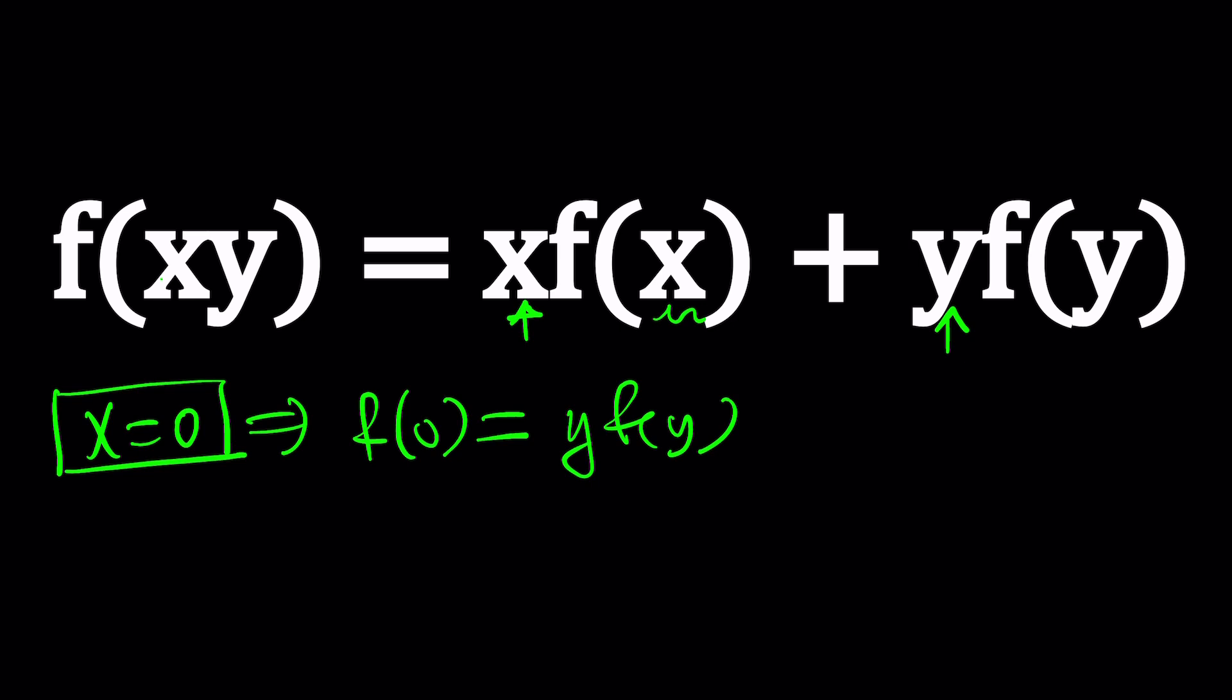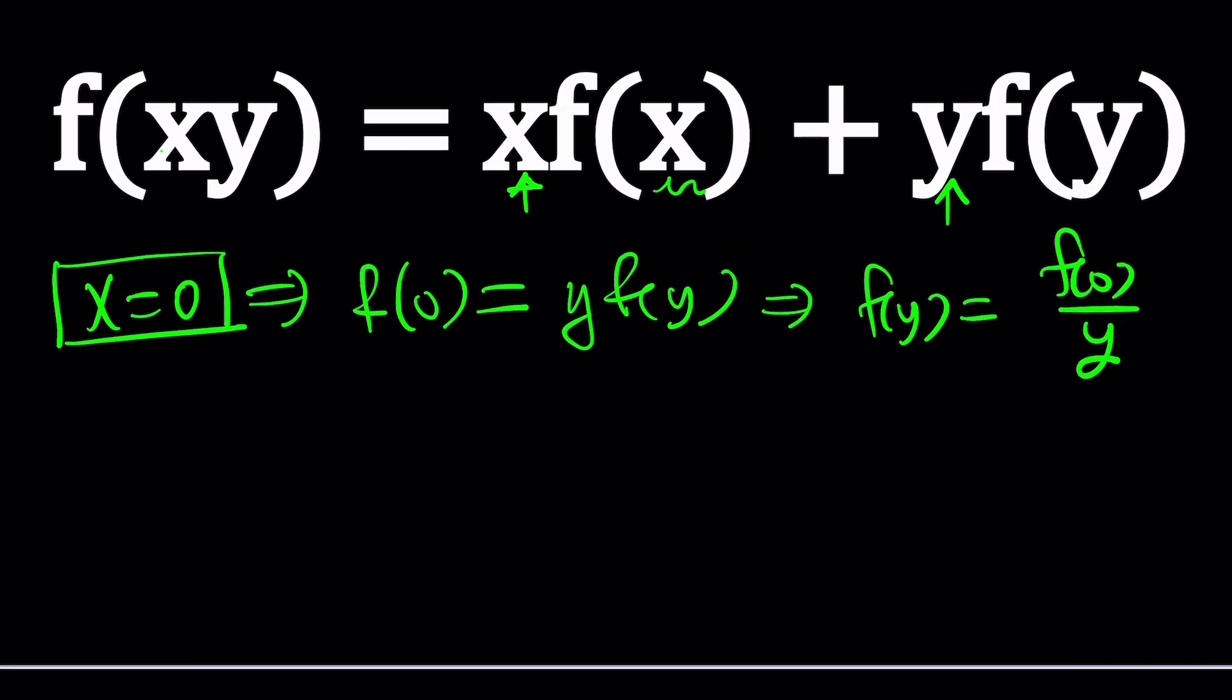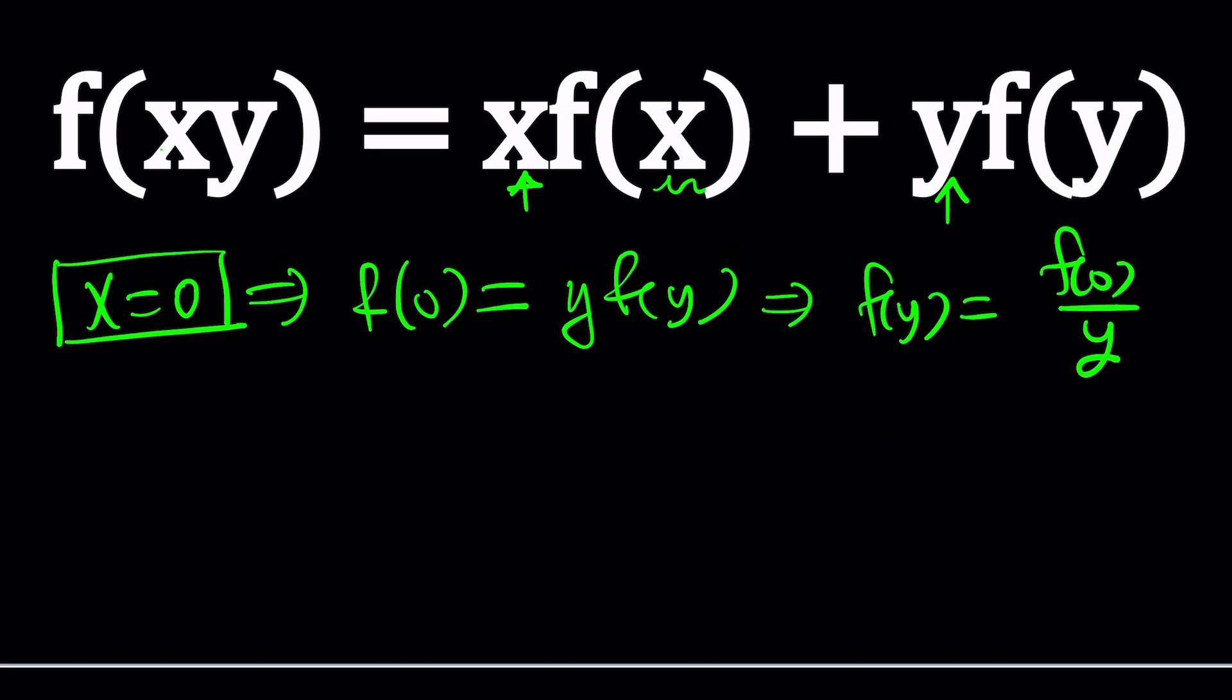Now, does this kind of give you an idea? Probably. Because you can write f of y now as f of zero divided by y, provided that y is not equal to zero in this equation. Of course, you need to make assumptions. You don't want to make it undefined. But if f of zero is a constant, right? It's the value at zero, the output when x is zero. So we can call it c maybe, set equal to c. So now f of y becomes c over y.